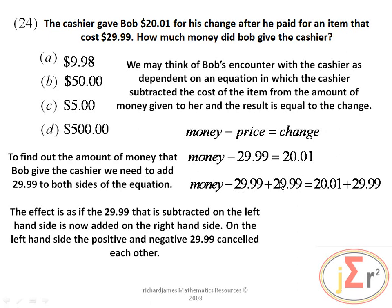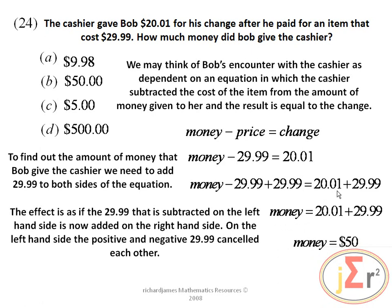On the right hand side, the net effect is 20.01 plus 29.99. We therefore add 20.01 plus 29.99 and the answer is equal to $50, represented by option B.